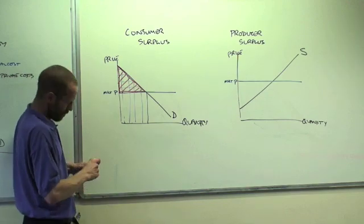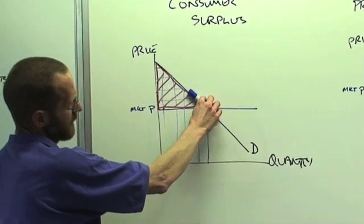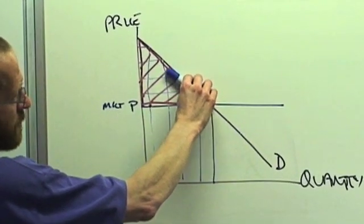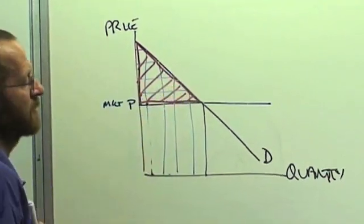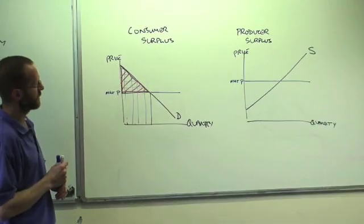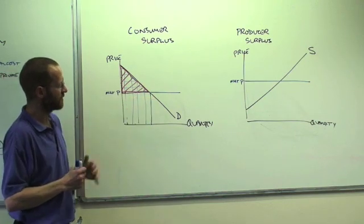Imagine likewise, what would happen if the demand curve became more elastic. If the demand curve becomes more elastic, it would pivot around like that. The area would go down and so consumer surplus would decrease. It will of course also change if the demand curve shifts in or out.